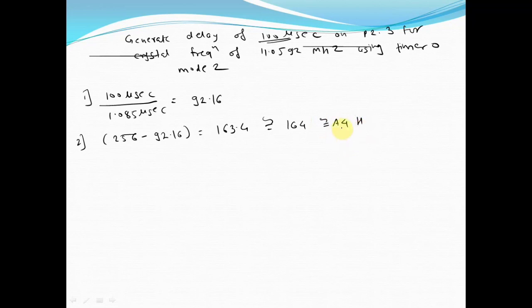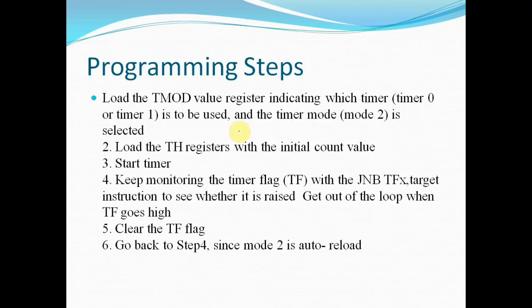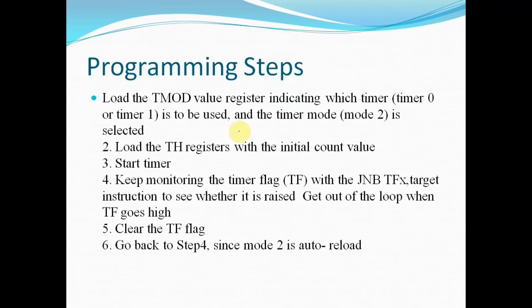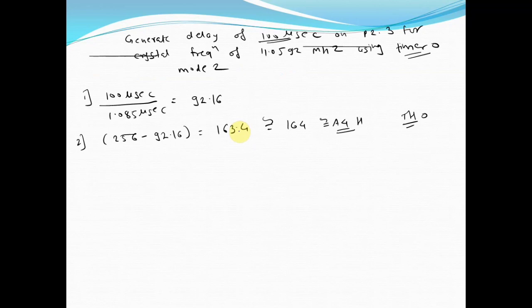This is the count value that we are going to load into TH. Here we are using timer 0, so we are loading the count value in TH0 register. Now we will start writing the program. First, you have to load the value in the TMOD register. As we are using timer 0 in mode 2, you have to load the count of 02H.